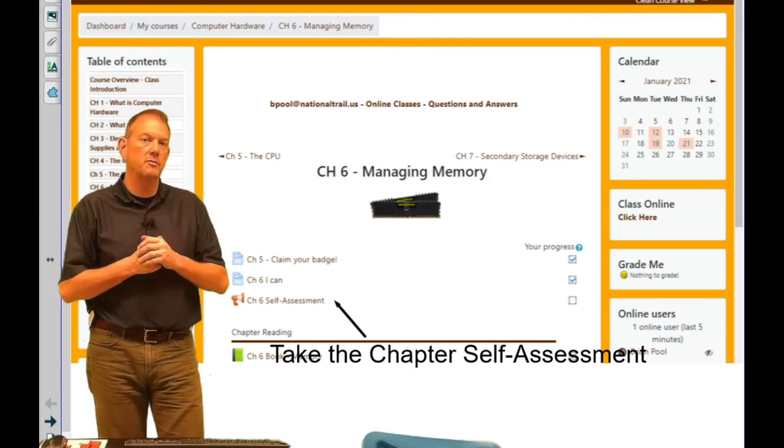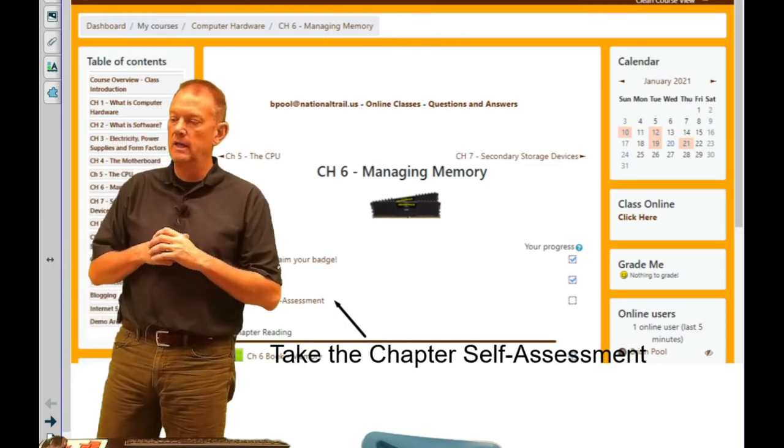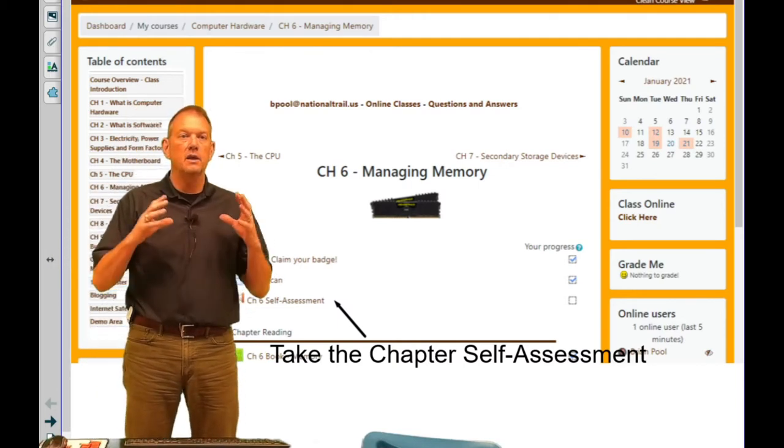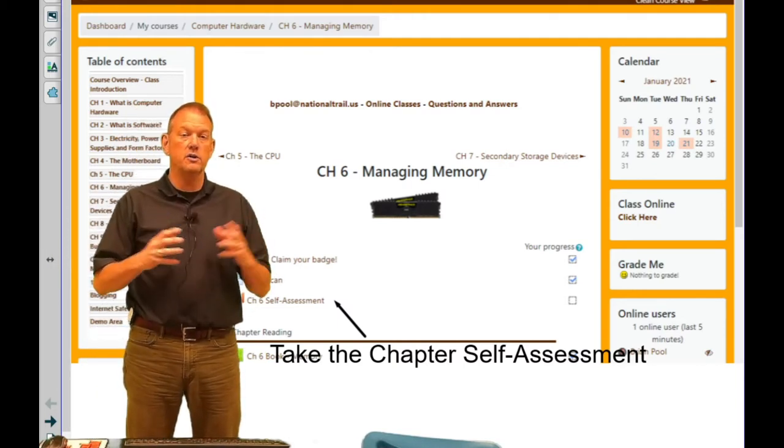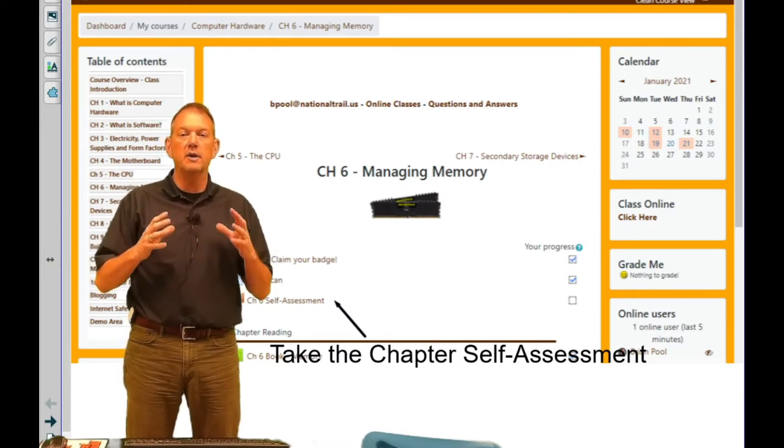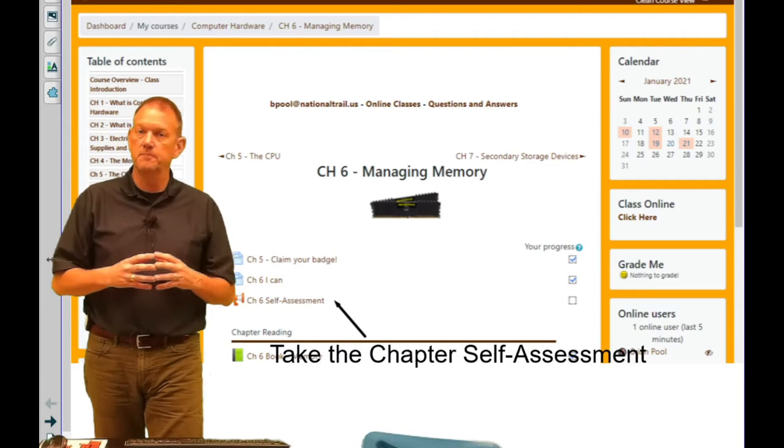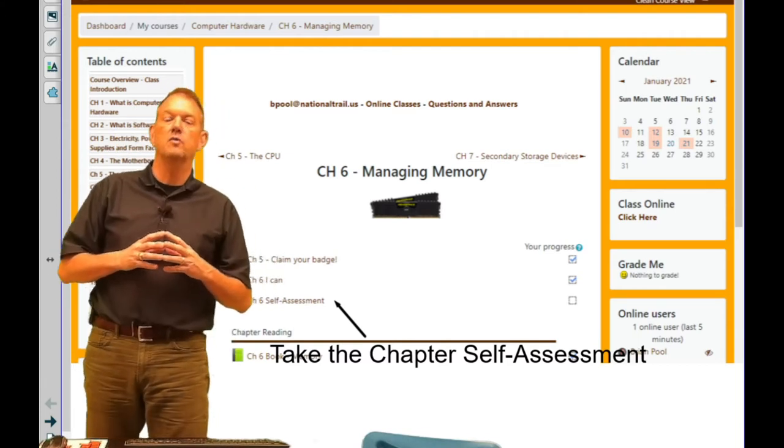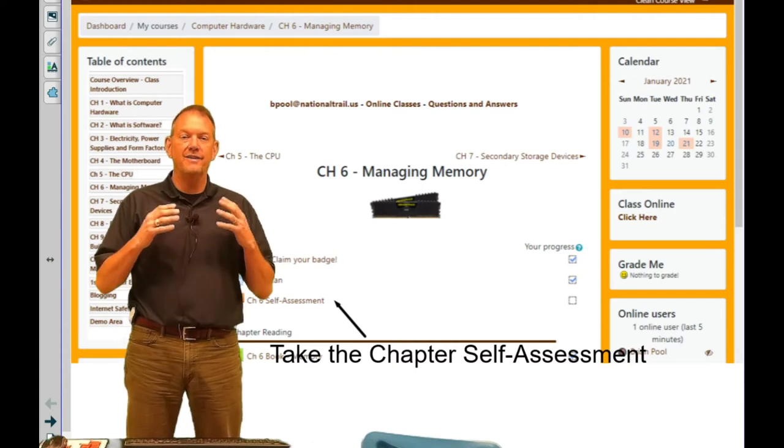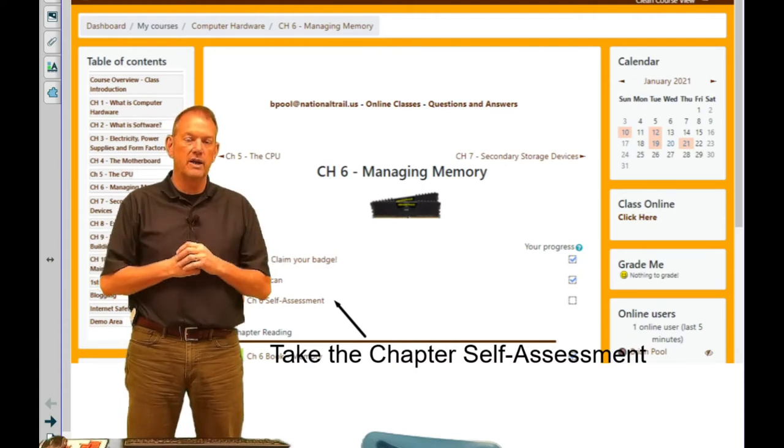We've talked about computer memory back in chapter one before. If you remember, computer memory encompasses both cache and system memory. Computer memory is primary storage. We talked back in chapter one about primary storage being that storage that the CPU directly uses.